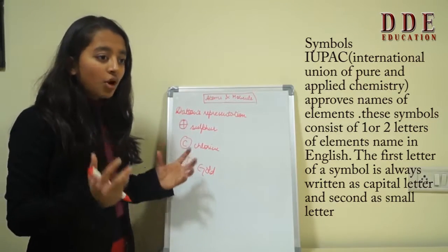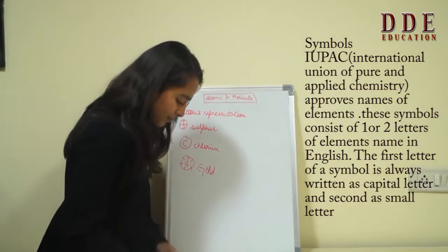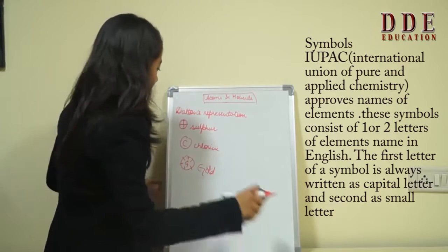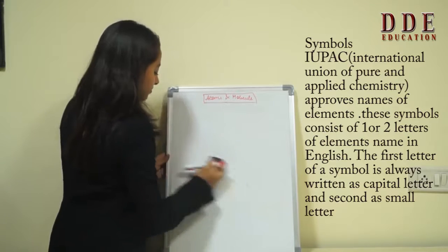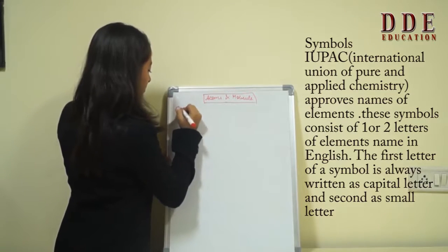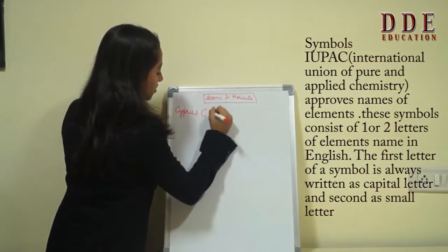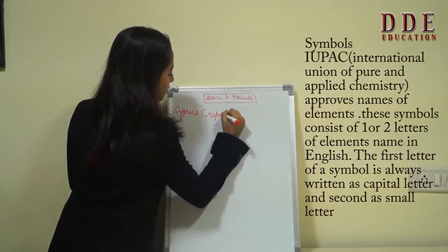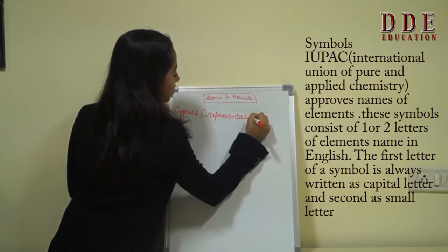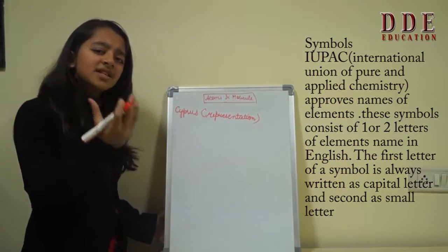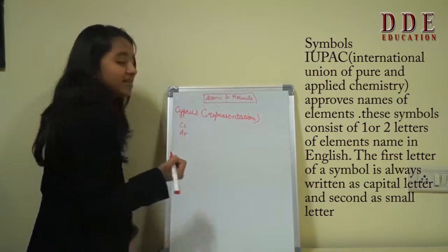So the modern day symbols were given by another scientist whose name was Berzelius. He gave the modern day symbols such as C, L, A, R, etc.